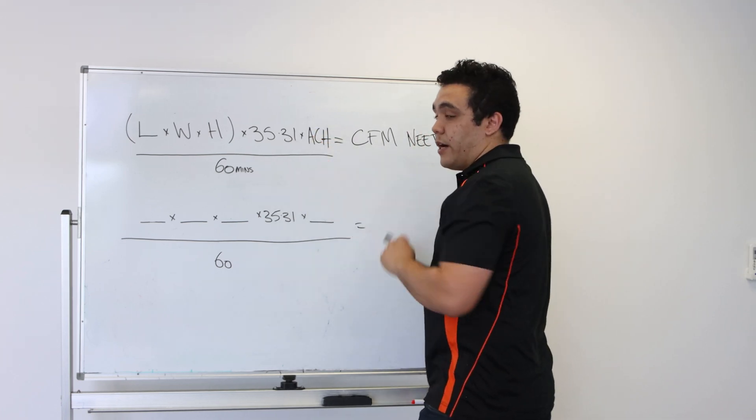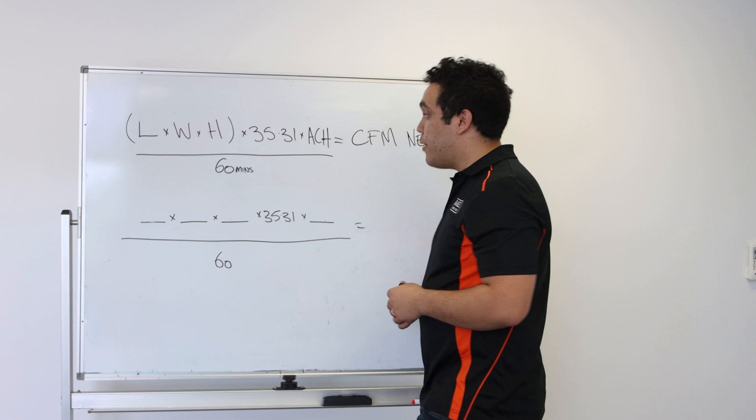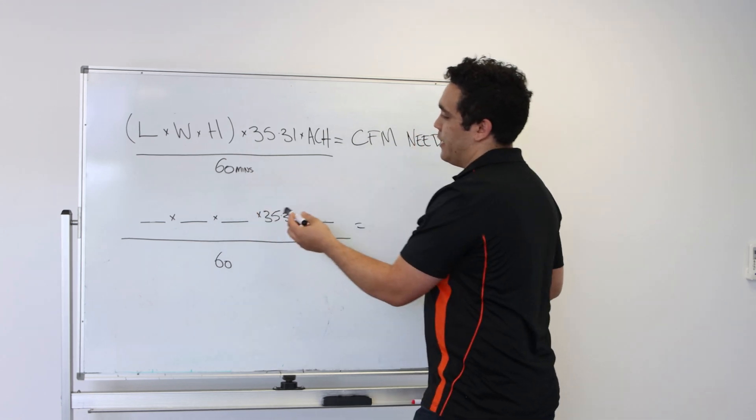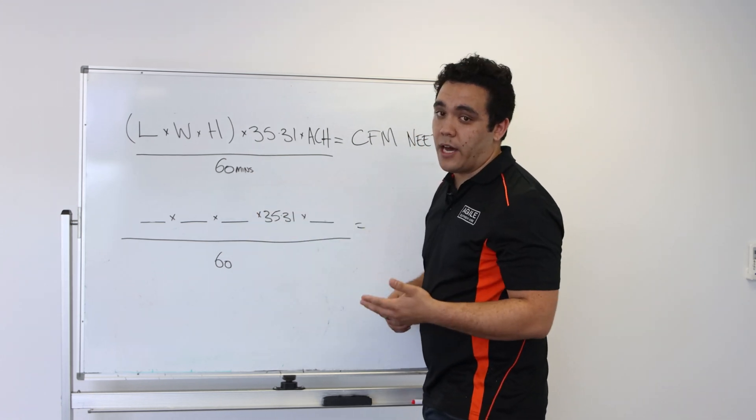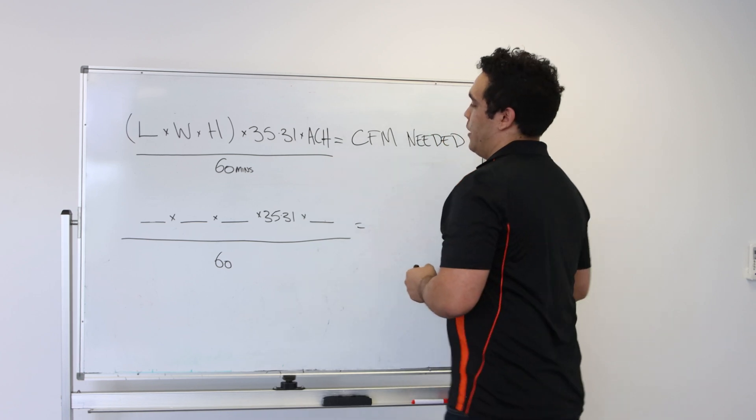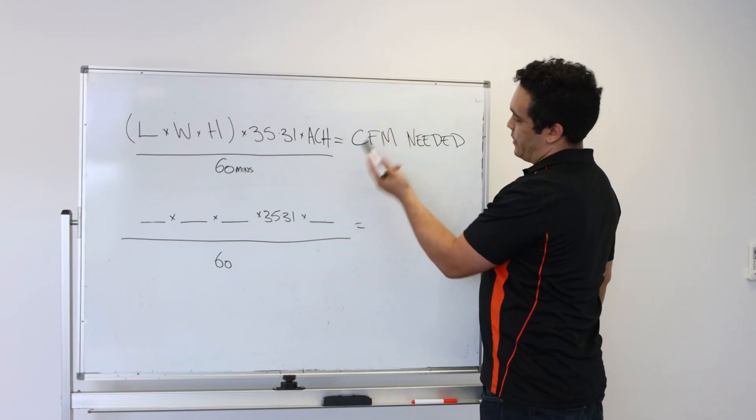And then we times by the amount of air changes that we need per hour, and then we divide by 60 to get it from cubic feet per hour to cubic feet per minute. And then what that'll give us is the CFM needed.